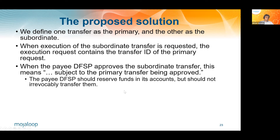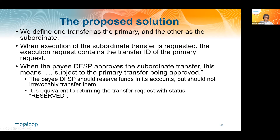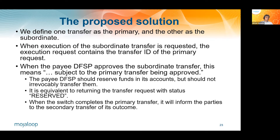In relation to the conversion, the currency converter, the foreign exchange provider, is effectively saying: I am happy with this transfer and I resign my right to cancel it to the switch. It's effectively making a promise which is exactly the same as the promise which the payer DFSP has made to the scheme by issuing the payment execution request. The foreign exchange provider should reserve funds in its accounts but should not irrevocably transfer them. This is equivalent to returning the transfer request with status reserved — it says I will wait to see whether this currency conversion has succeeded or not. When the switch completes the primary transfer, it informs the parties to the secondary transfer of the secondary transfer's outcome, and only at that point does the switch record the secondary transfer as having completed.